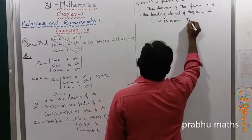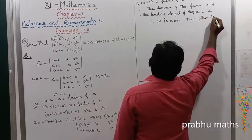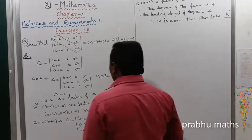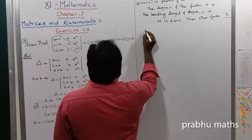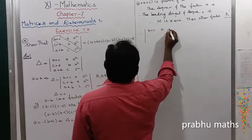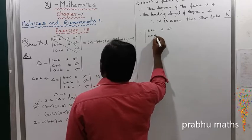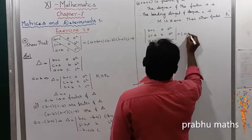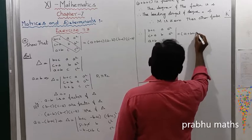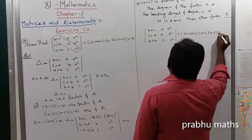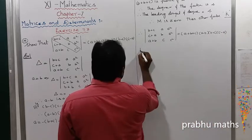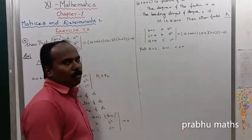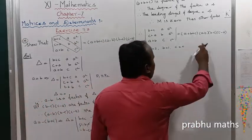So therefore, the determinant of b+c, a, a² / c+a, b, b² / a+b, c, c² equals k·(a+b+c)(a-b)(b-c)(c-a). To find k, put a=2, b=1, c=0. Then b+c=1, c+a=2, a+b=3.